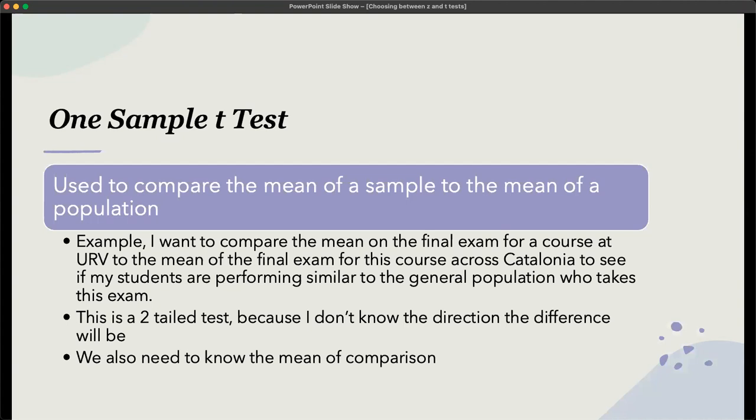So again, this will be a two tail test because I don't know the direction that the difference will be. And we also need to know the mean of comparison. So I would need to know what the mean across Catalonia is. So what is the mean or arithmetic mean or average of the students who take this exam across Catalonia? And then I'm going to use my students and we're going to compare that.